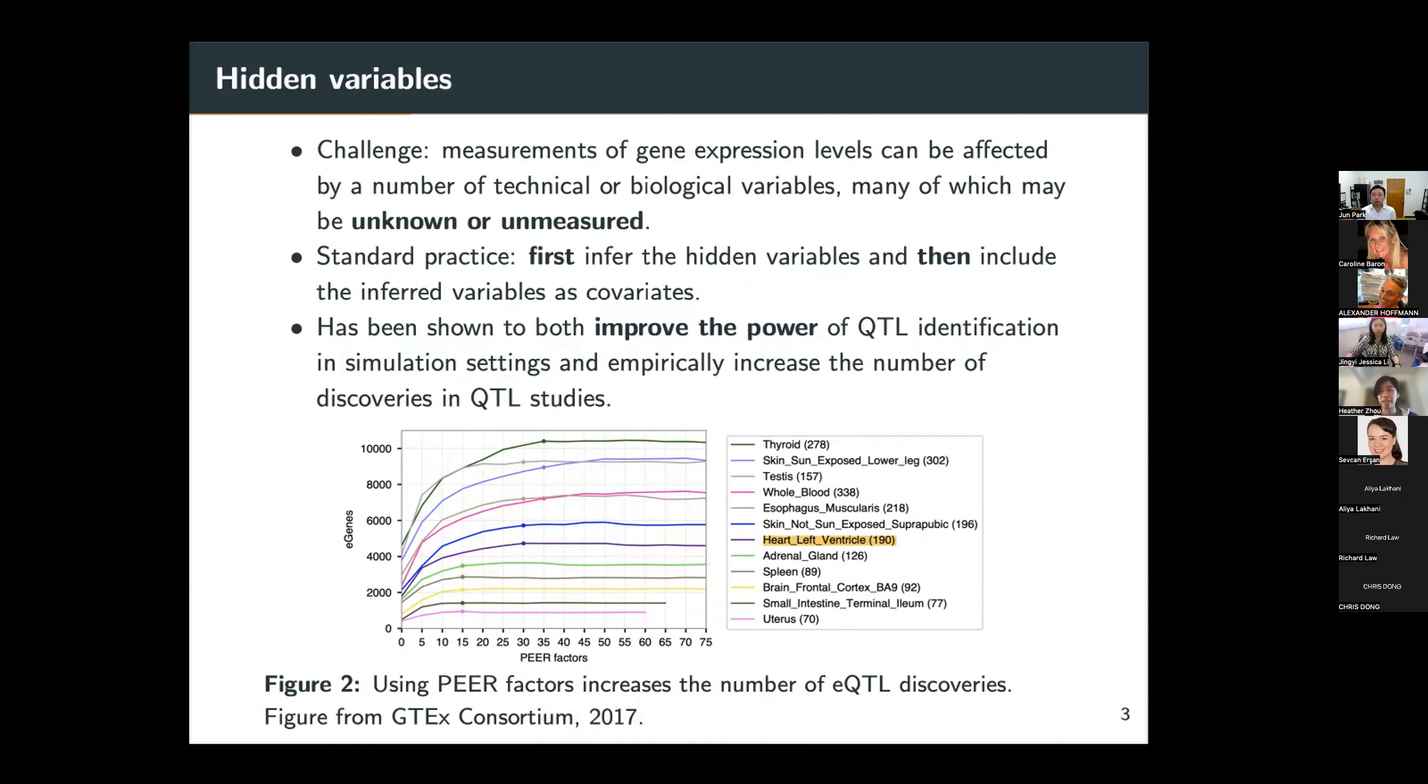So the standard practice now is to first infer the hidden variables from the phenotype data, for example, gene expression matrix, and then include the inferred variables as covariates in the QTL analysis. This type of approach has been shown to both improve the power of QTL identification in simulation settings and empirically increase the number of discoveries in QTL studies.